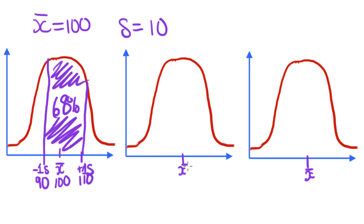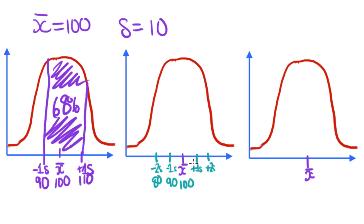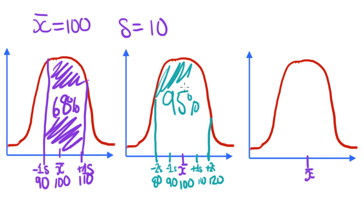For the next graph, I'm going to travel two standard deviations away from the mean. So two standard deviations either side: down one standard deviation is 90, down two is 80; up one standard deviation is 110, up two is 120. Going 100 minus 10 minus 10 gives us 80, and 100 plus 10 plus 10 gives us 120. So between 80 and 120 — which is two standard deviations either side of the mean — 95% of all the data lies within that region.